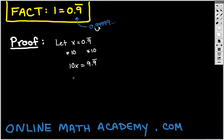So the next thing I'm going to do is subtract x from both sides. And this is a legal thing to do because if I have an equation like I do right here, it's certainly legal to subtract the same thing from both sides. And so what am I left with? I'm left with 10x minus x equals 9.9 repeating minus x.